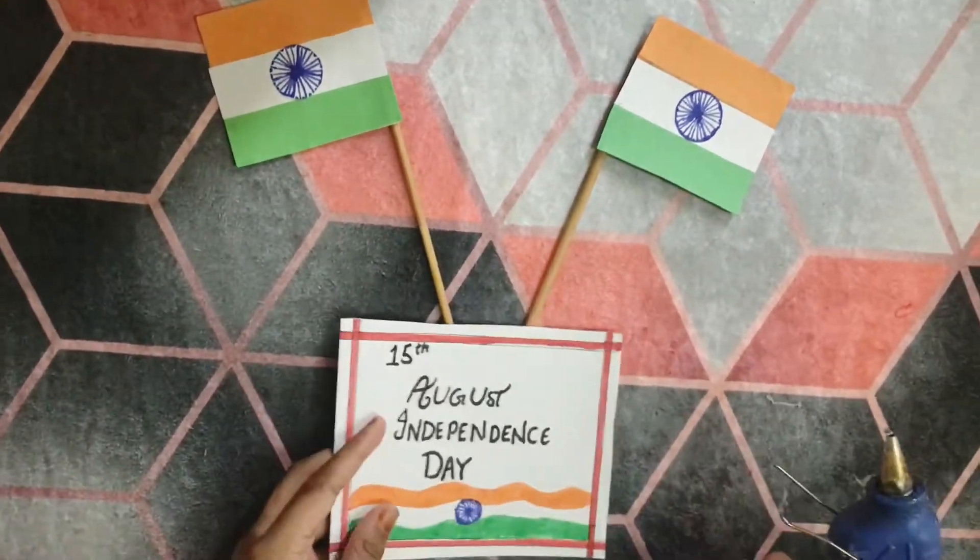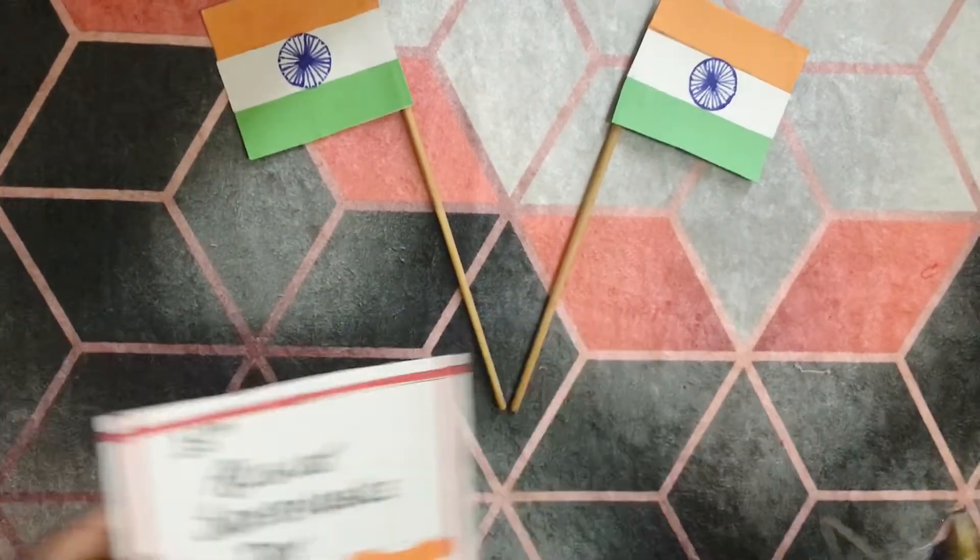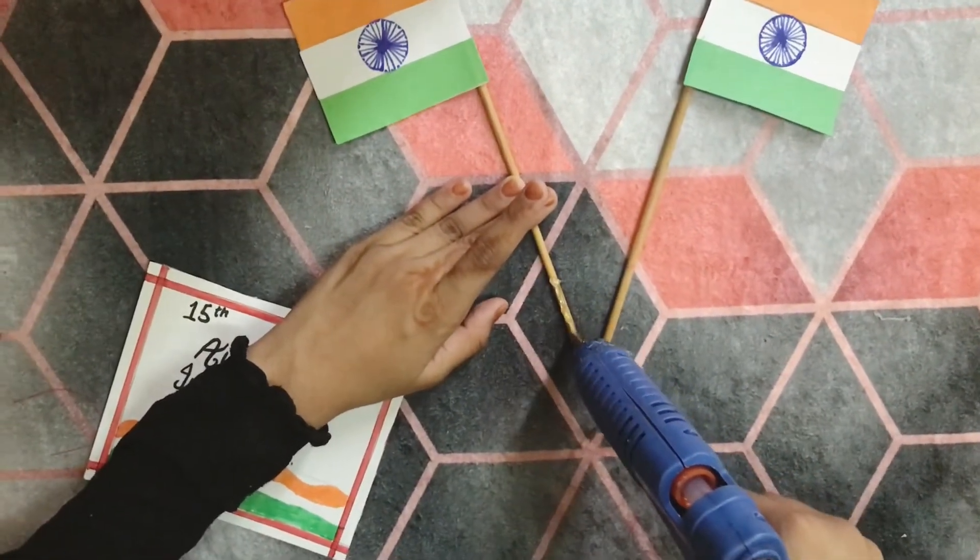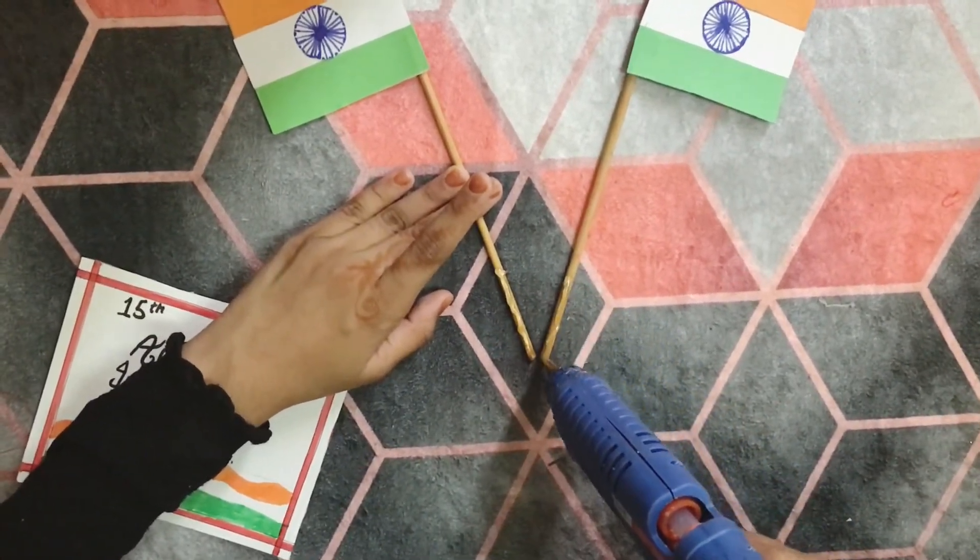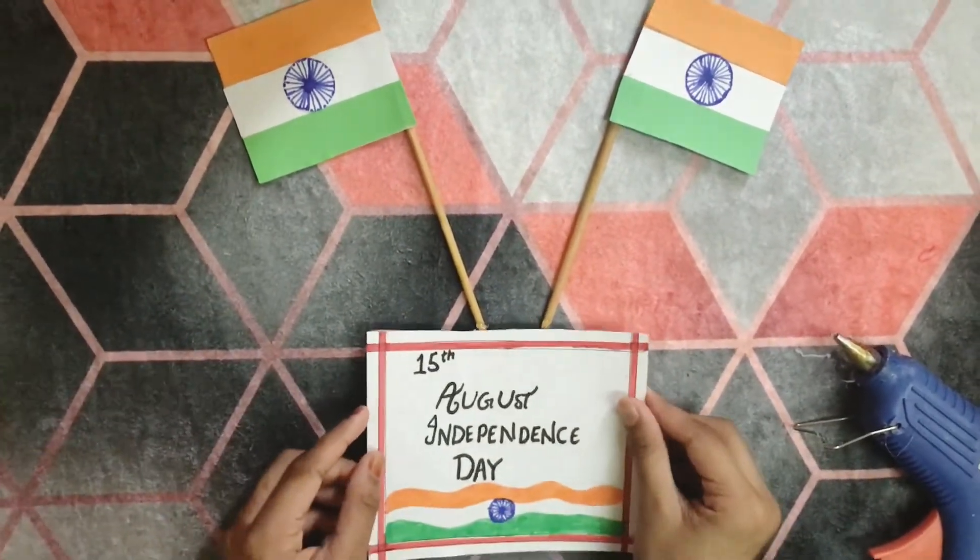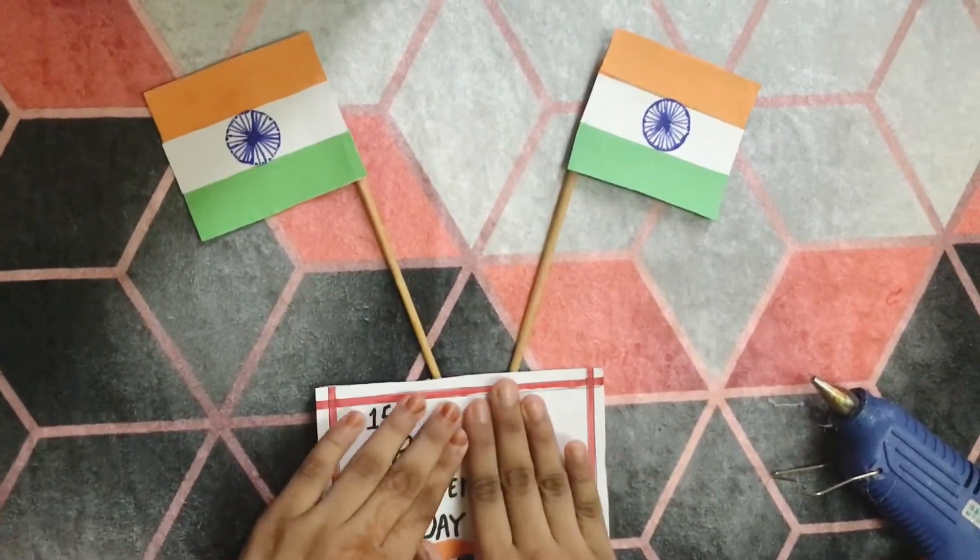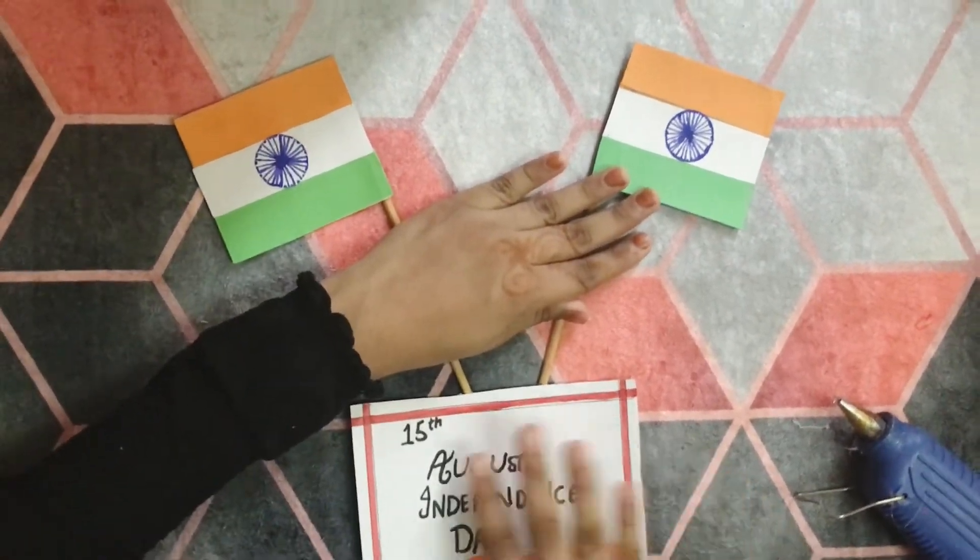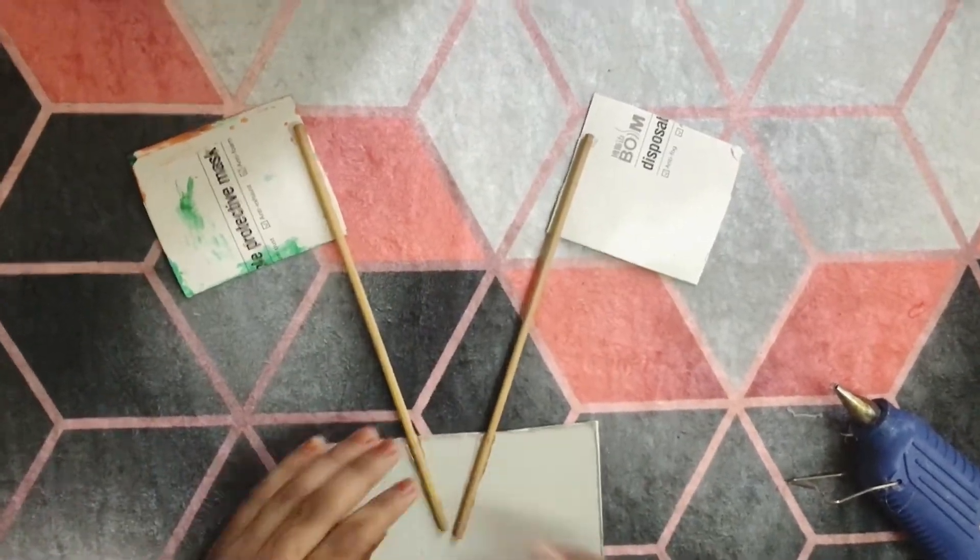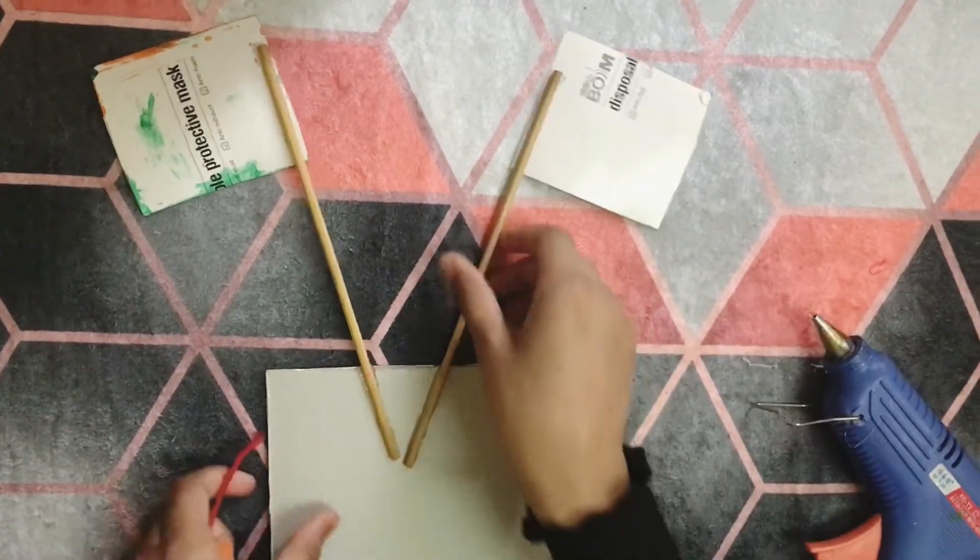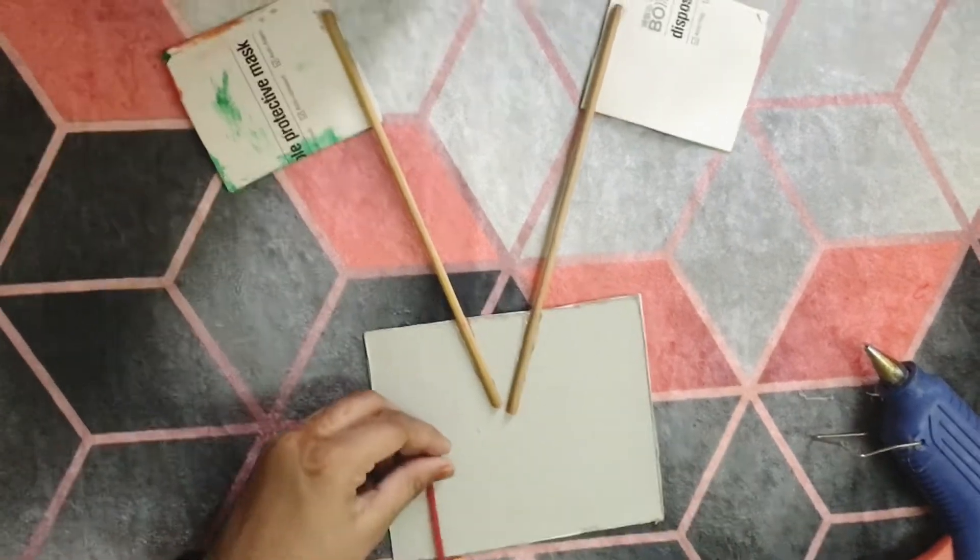And I am going to stick it on the flag. Like this. I am going to apply glue with glue gun and I am going to stick it. And I am going to turn it around. I am going to stick the hearts.